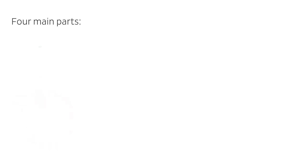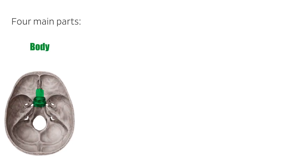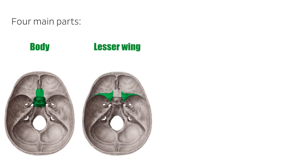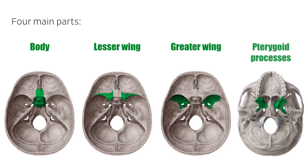There are four main parts to the sphenoid bone: the body, the lesser and greater wings, and the pterygoid processes.